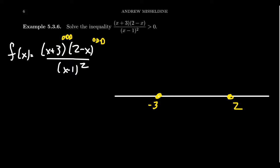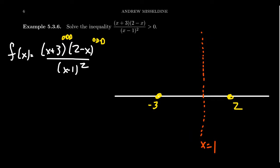We also have a vertical asymptote from (x−1) in the denominator, sitting at x = 1, between negative 3 and positive 2. I'll put a dashed red line there. When it comes to rational functions, we must look for where the function equals 0 (x-intercepts) and also where it's undefined — because a function can switch signs at an x-intercept by crossing the axis, or by going through infinity at a vertical asymptote. These are the critical points for solving these inequalities.